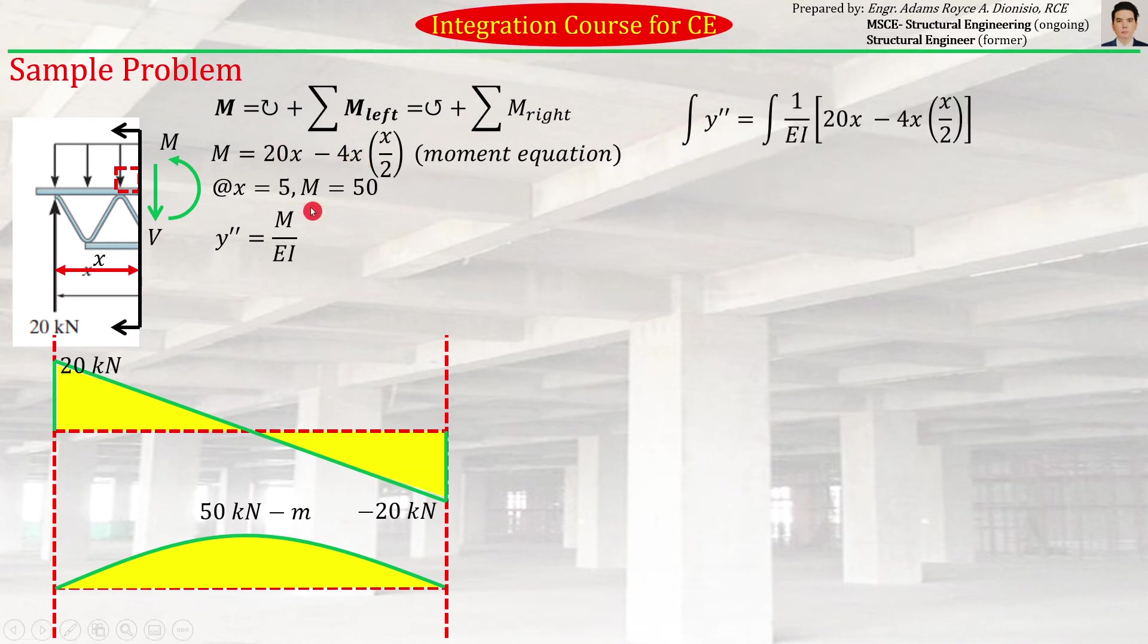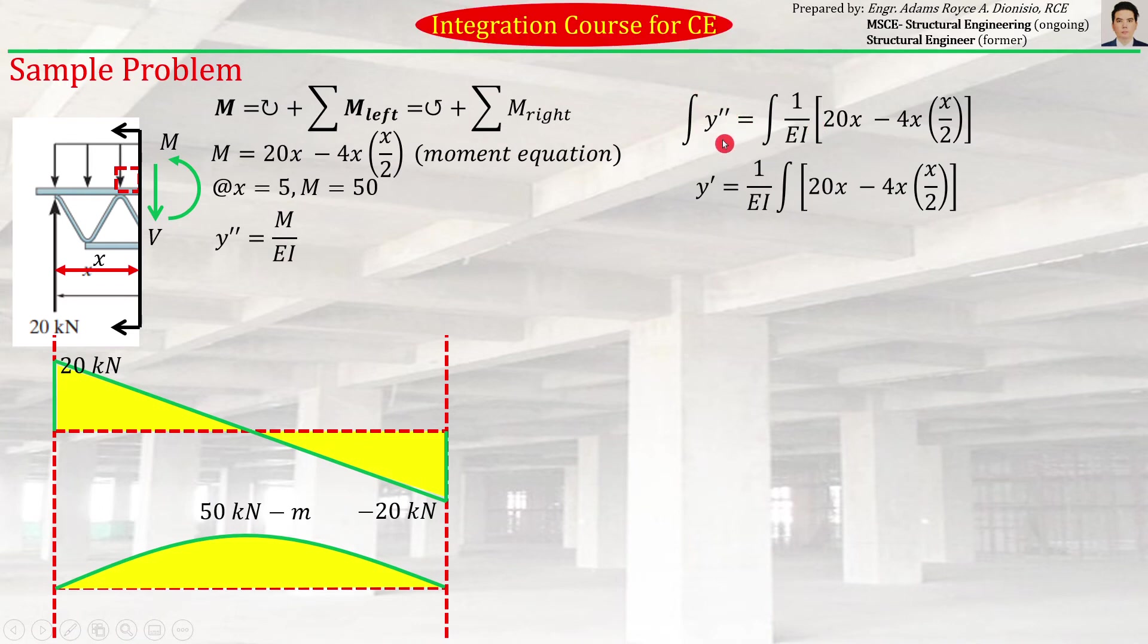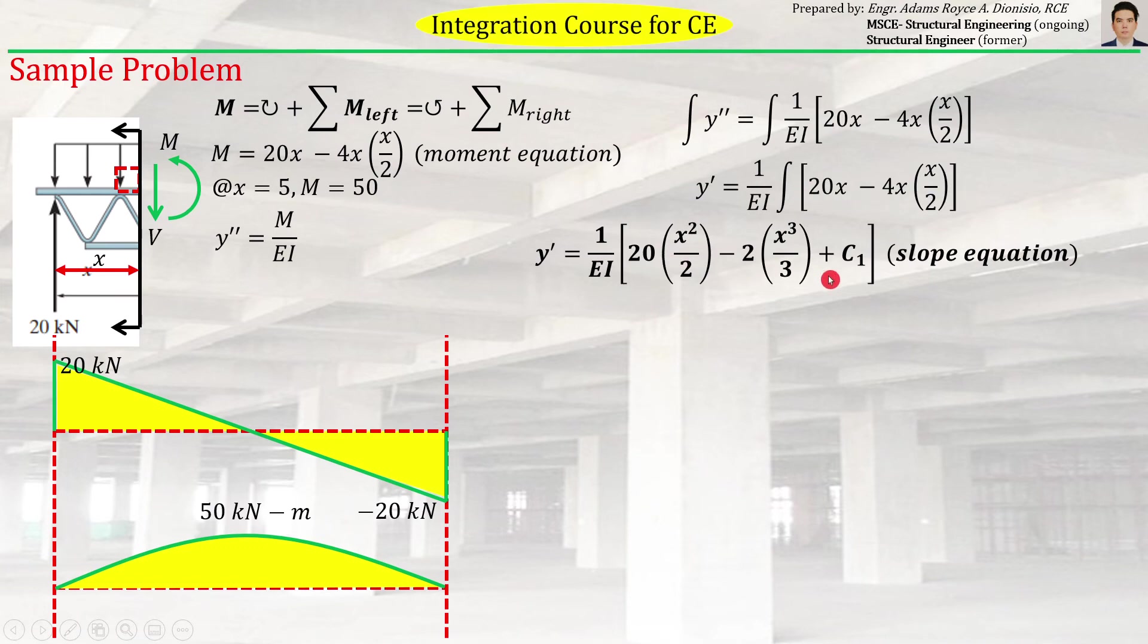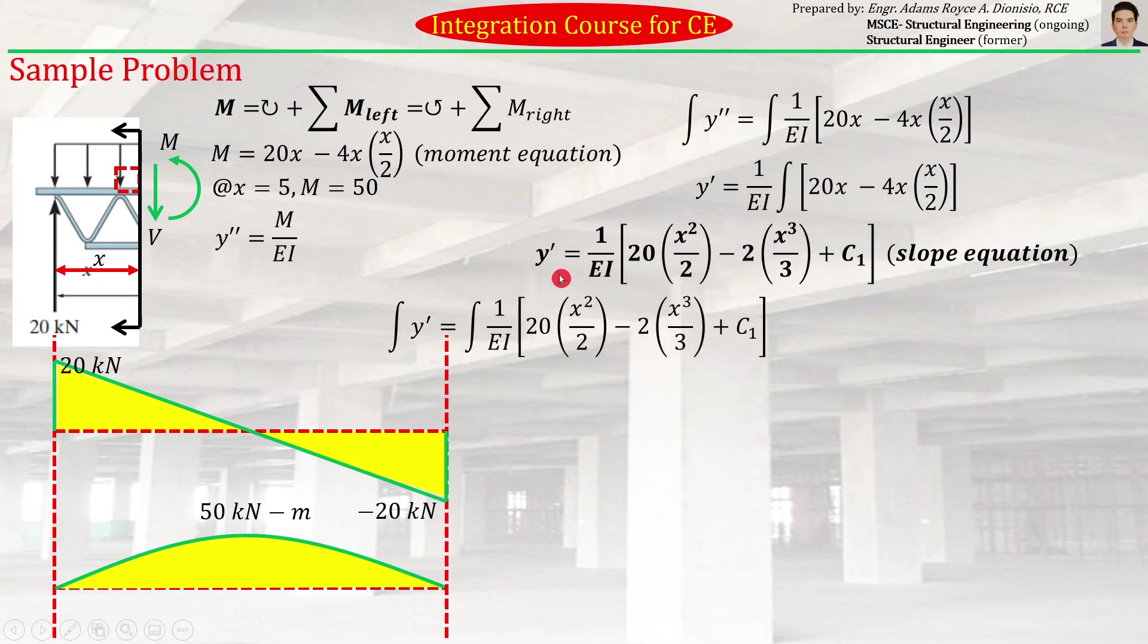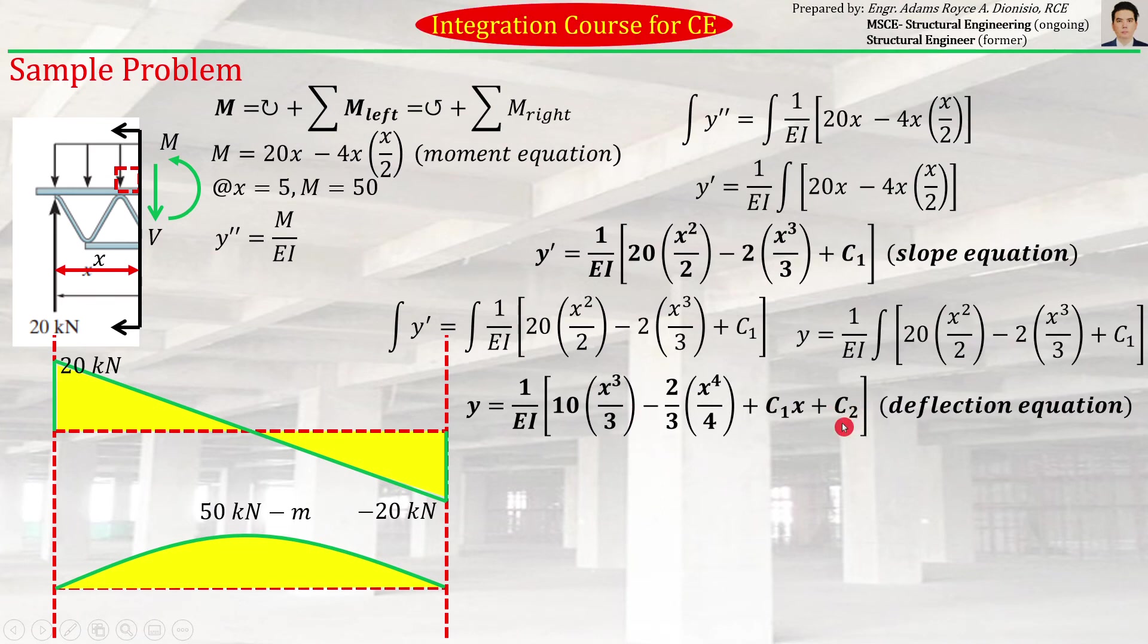Substituting that equation here and then integrating, this is what comes out. When we simplify, the integral of y'' will just be y'. The integral of 1/EI—we can take out the 1/EI—so this is what we need to integrate inside. When we integrate and simplify, this is what comes out. Just have to be cautious because there's always a constant of integration. The equation that we obtained is actually the slope equation, the equation for finding θ. If we integrate that further, the result will be this. We have introduced another constant of integration, and the equation we have produced is what we call the deflection equation.